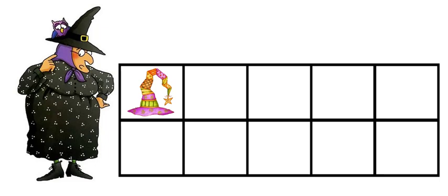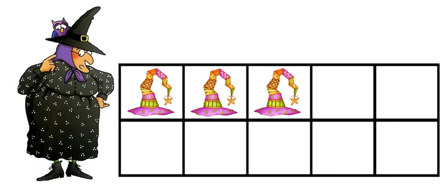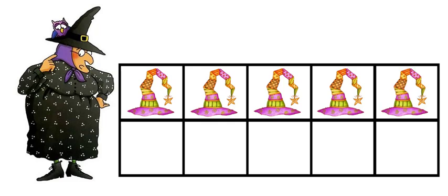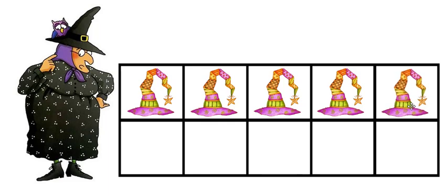There's one, two, three, four, five — four. We went back, didn't we? One disappeared. Where'd that hat go? Let's see if we can put one more on. Now we have five again.